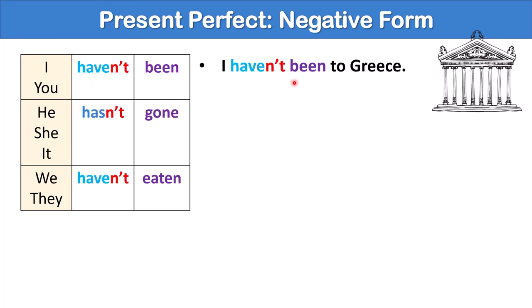For example, I haven't been to Greece. Now we also often use the word never with the present perfect. For example, I have never been to Greece.